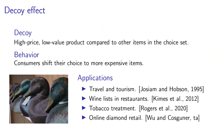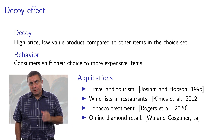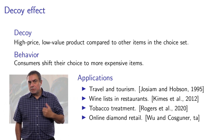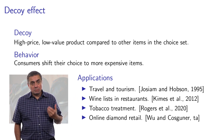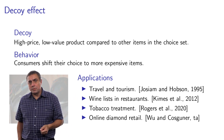What we have just seen in the context of the journal subscription is sometimes called the decoy effect. The idea is to include high-priced, low-value products compared to the other items in the choice set, and then observe the shift in consumer behavior toward more expensive items. This is well documented in the literature and has been applied in wine lists, travel and tourism, tobacco treatment, and online diamond retail.